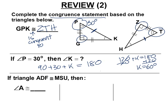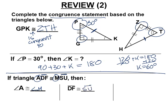If triangle ADF is congruent to MSU, then angle A must be congruent to angle M, because the order totally matters. Line segment DF must be congruent to SU. You could write it as US since a side can go either order, but keep it in the same order. Side FA must be the exact same length as side UM or MU.